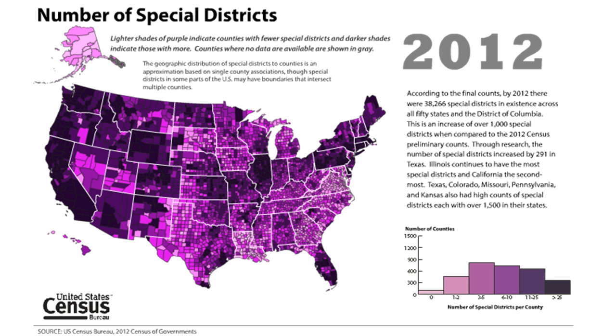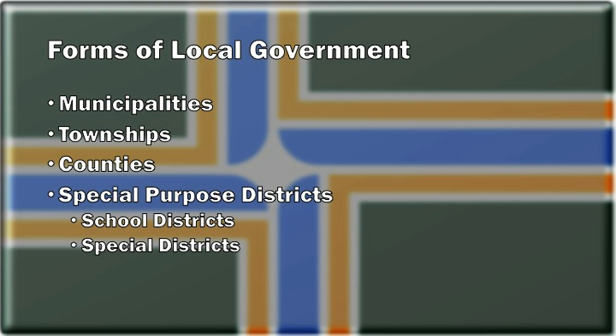Overall, there are more than 39,000 of these types of districts, meaning they make up close to half of all local governments, so it really pays to know which special districts apply to you. In review, there are four forms of local government: municipalities, which are small governments focused on a population center; townships, which are similar but focus on a small region; counties, which completely divide up the land in each state into governed pieces; and special-purpose districts, made up of school districts and special districts, each serving a single purpose to a given region of people.